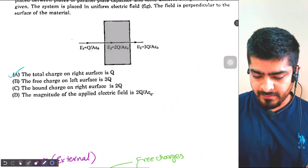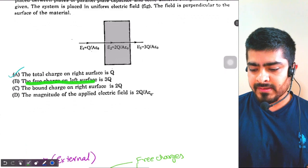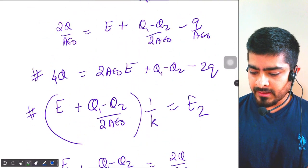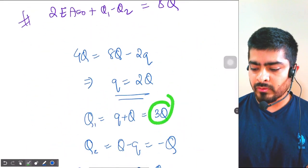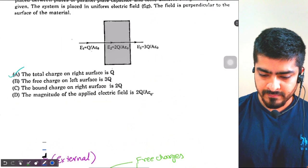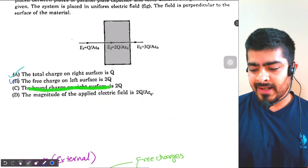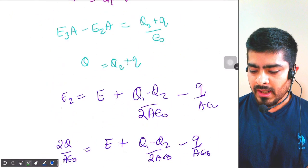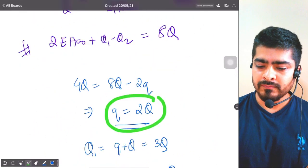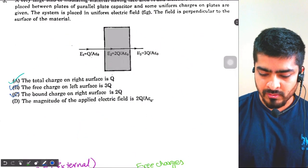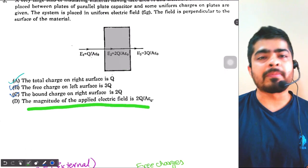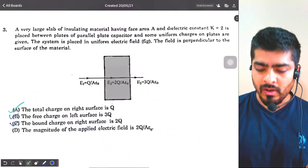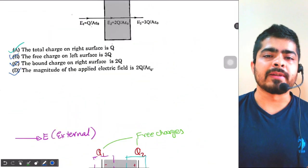Let's check the options. The free charge on the left surface is Q1, and Q1 equals 3Q — so option B is correct. The bound charge on the right surface is small q, and q equals 2Q — so option C is also correct. The magnitude of the applied electric field is 2Q/Aε₀ — which is also correct. So all four options are correct.